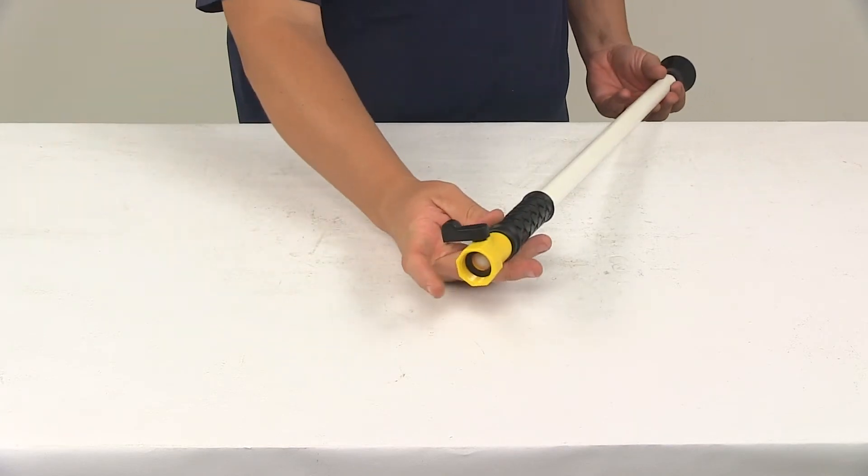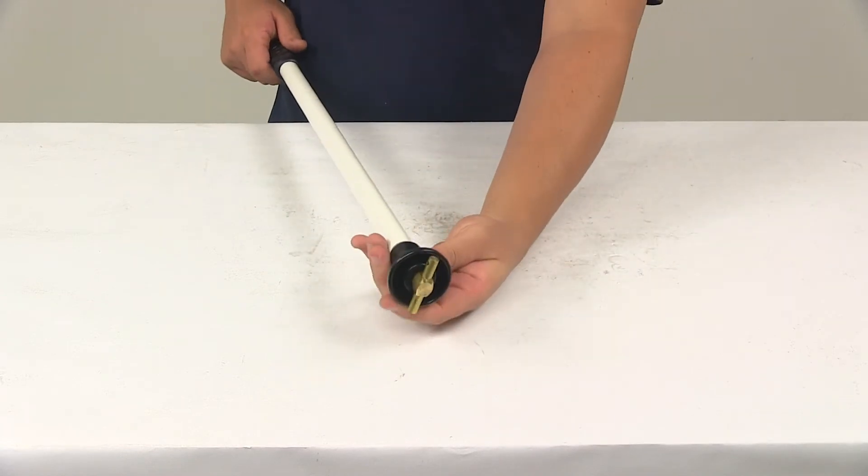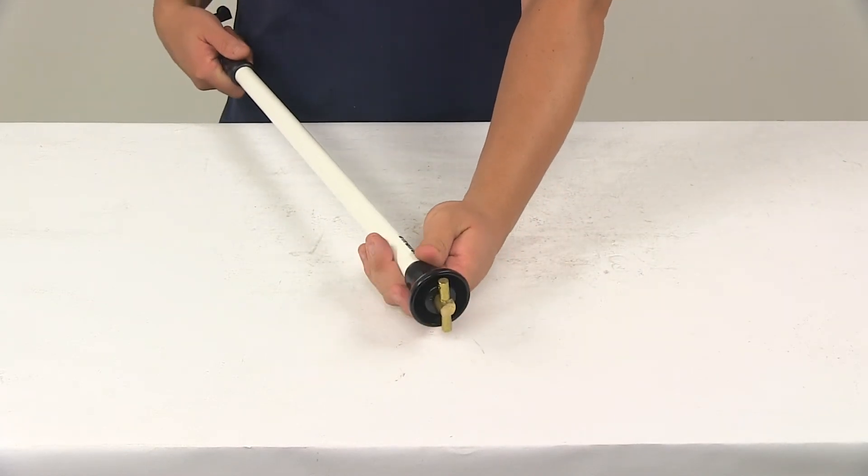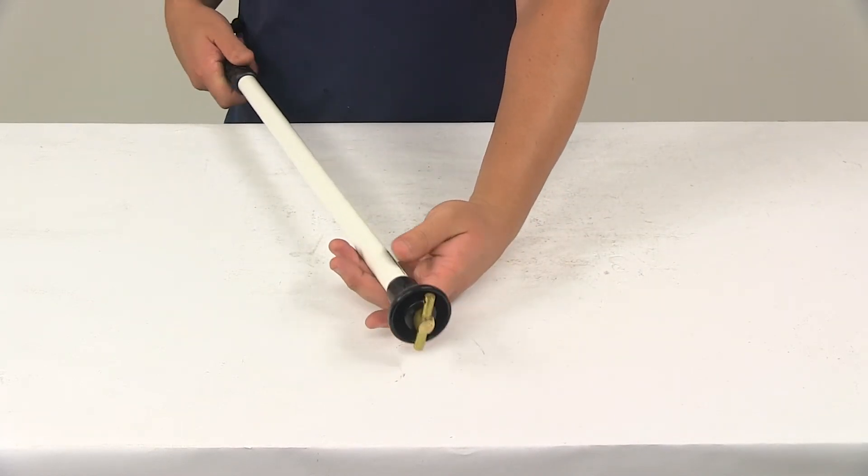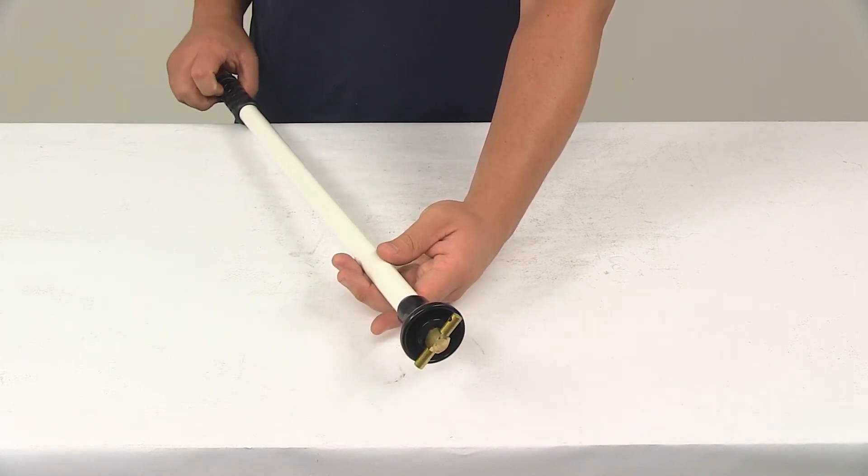It's very easy to use. You simply attach a garden hose at one end, and then you insert this end into your toilet, turn on the water supply to the hose, open the valve, and allow the unit to start rinsing.